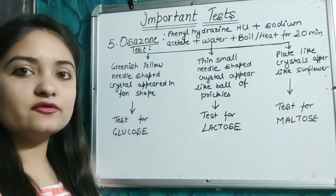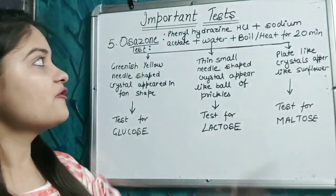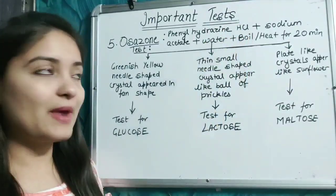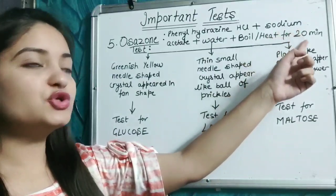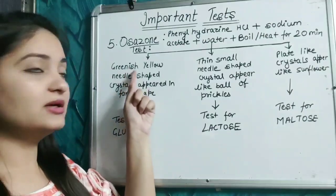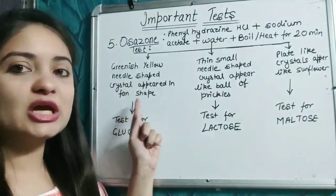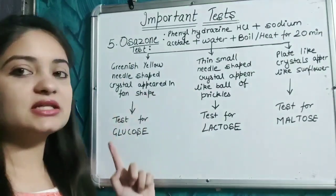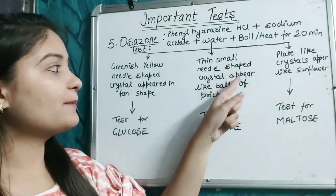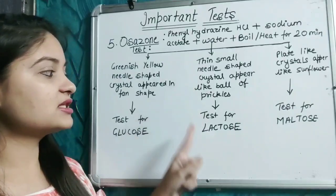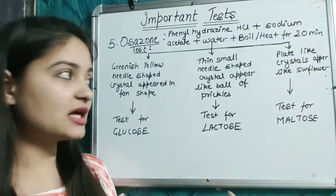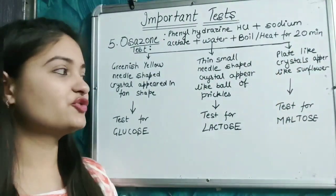The last test is the osazone test, in which the required reagents are phenylhydrazine hydrochloride, sodium acetate, and water. These are combined and heated for about 20 minutes. Three observations result: greenish-yellow fan-like crystals indicate glucose; thin small needle-shaped crystals appearing like a ball of prickles indicate lactose; and plate-like crystals appearing like a sunflower are the confirmatory result for maltose.